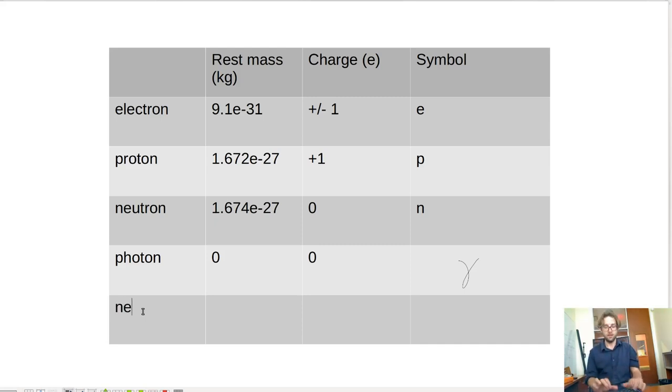And then the neutrino, the plucky little neutrino, has very close to zero mass, still positive, though. So it's greater than zero, but not by a lot. Zero charge. It's also neutral. And we denote the neutrino with the Greek letter nu. So nu kind of looks like a stylized V, but is actually related to the letter N in English.